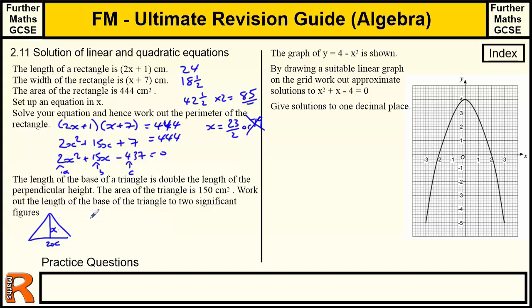Then the area of the triangle is half the base. Half times 2x times the height, which is x. And that equals 150. So the half of 2x is just x, so that's just x squared equals 150. So x equals the square root of 150.